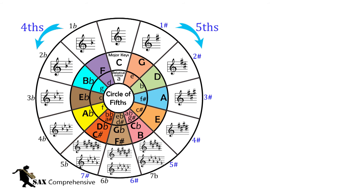We can also use the circle of fifths to find the notes of these triads. For example, to find the notes of the C major triad, simply follow the arrows and go down at an angle and then straight up: C, E, G. Rotate the arrows to find the other chords. For example, the notes of the G major triad would be G, B, D. To find the notes of the minor chords, we go straight up then down at an angle. So the notes of A minor are A, C, E. Simply rotate the arrows to find the notes of the other minor chords.